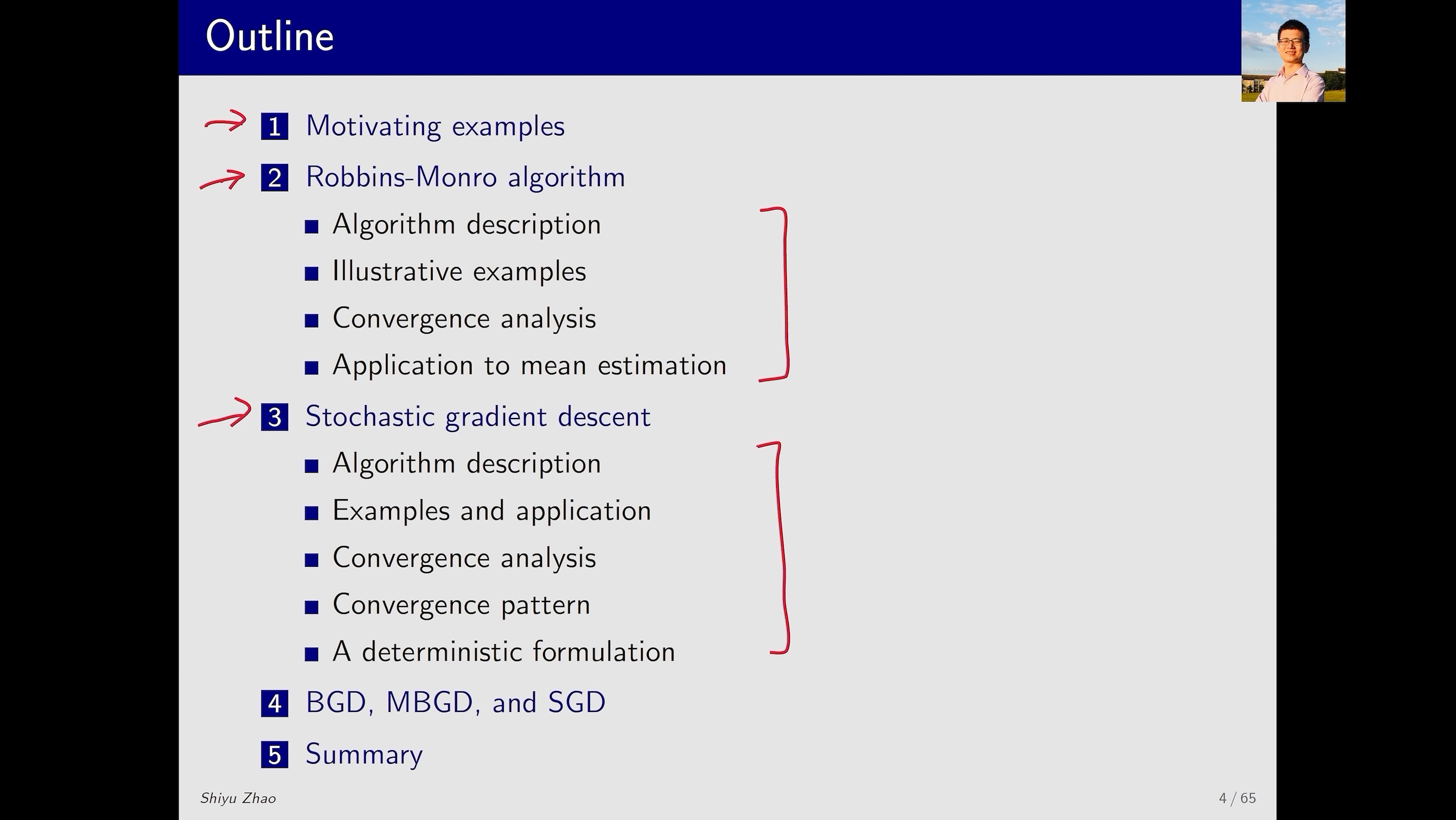The third part is about stochastic gradient descent, which is actually a special case of the Robbins-Monro algorithm. We will also introduce batch gradient descent, mini-batch gradient descent and stochastic gradient descent, and then compare these three methods. Finally, I will provide a summary.